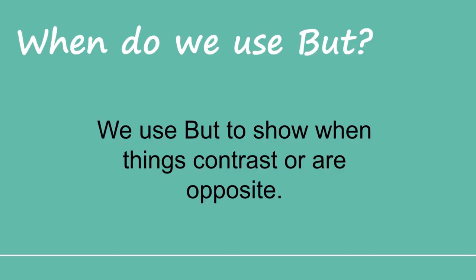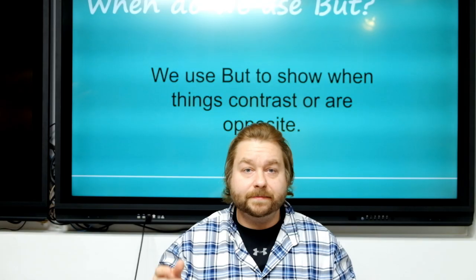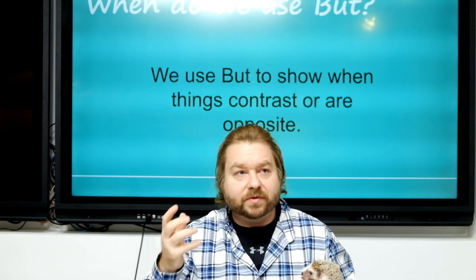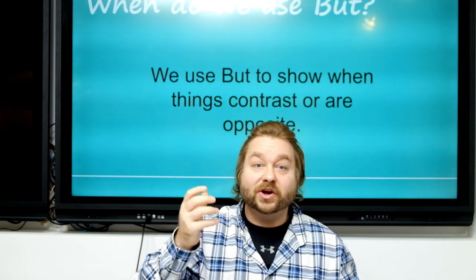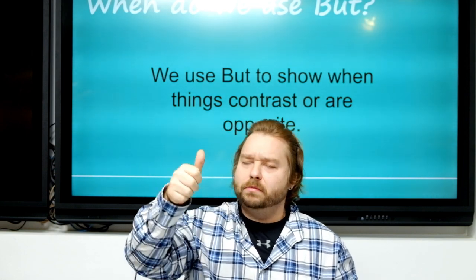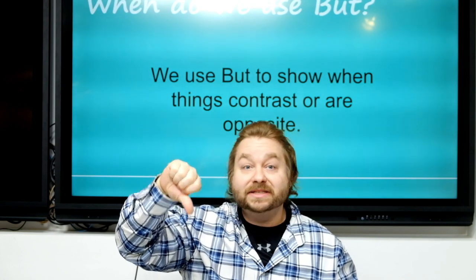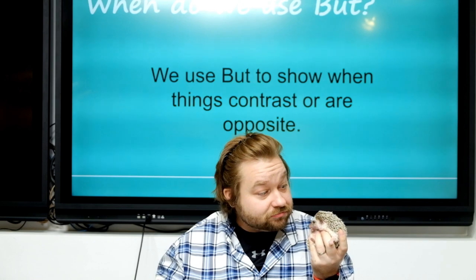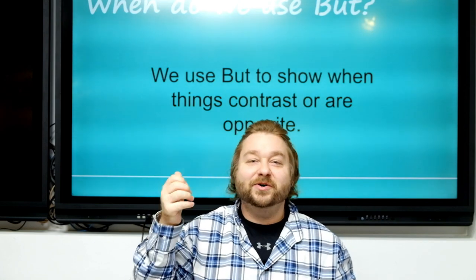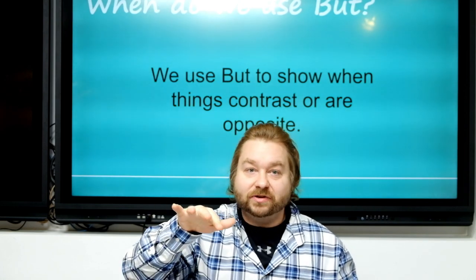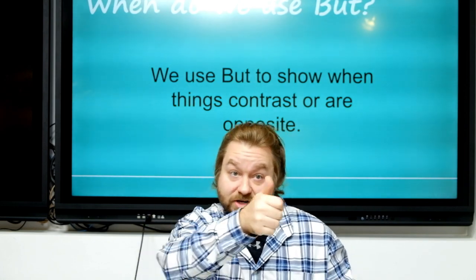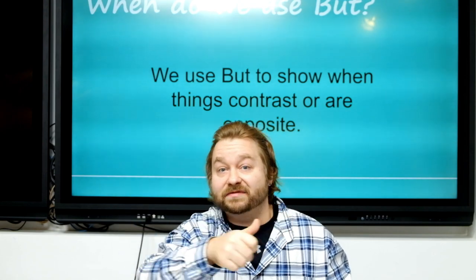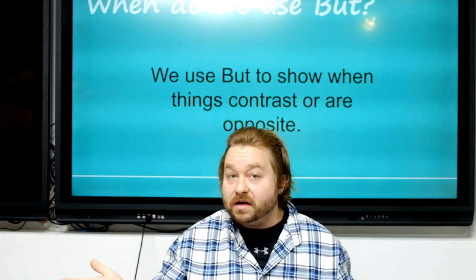We use 'but' to show contrast — things that are opposite. In our example, 'the man was early' — that's a good thing. But then something negative happened: 'his car broke down.' So 'but' shows contrast: a positive and a negative, a good and a bad.